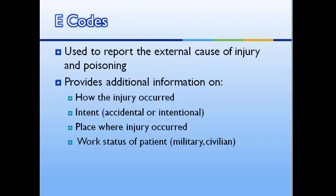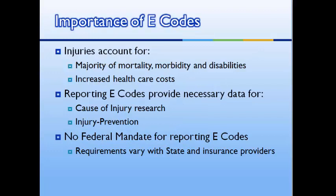As you recall, E-codes are used to report the external causes of injury and poisoning. E-codes are important since they provide the data source for tracking the causes of injuries and poisonings, such as how do we know that the majority of accidents occur in the home, or which sport causes more head injuries. Note that although there are no federal requirements for reporting E-codes, the Colorado Hospital Association requires that E-codes are reported on hospital claims.